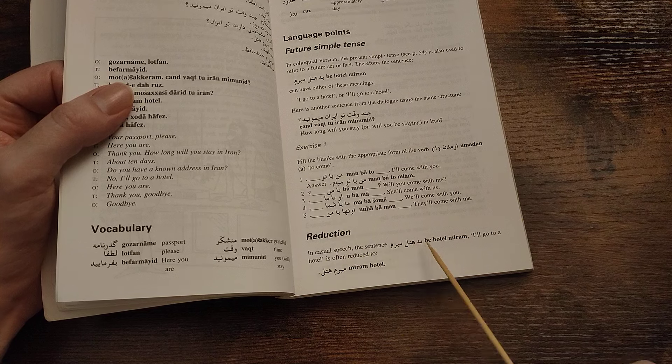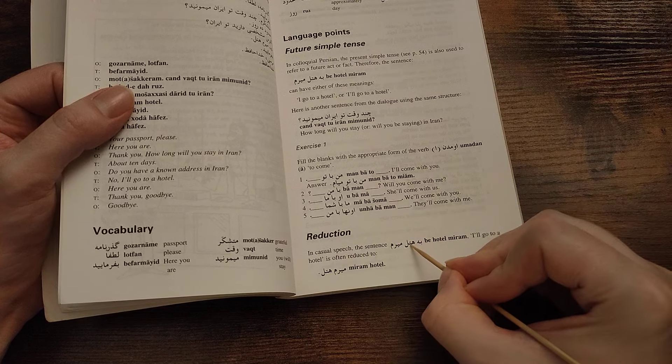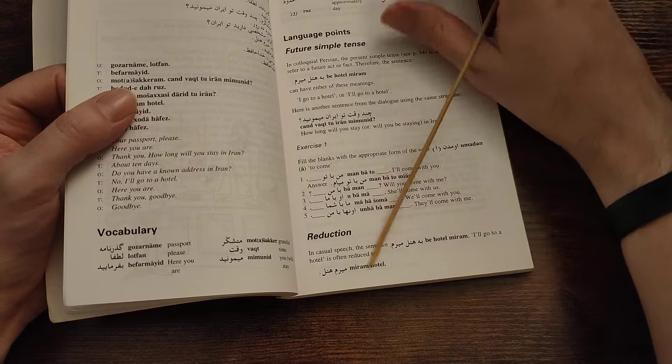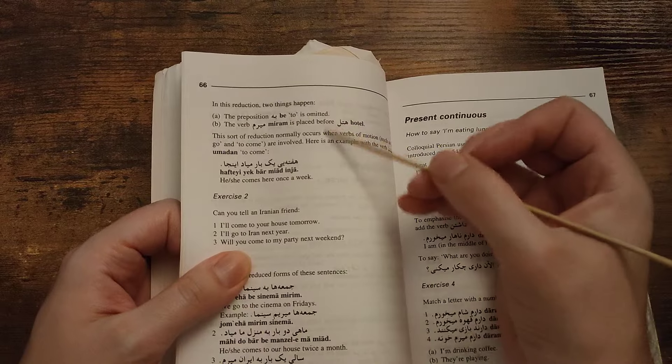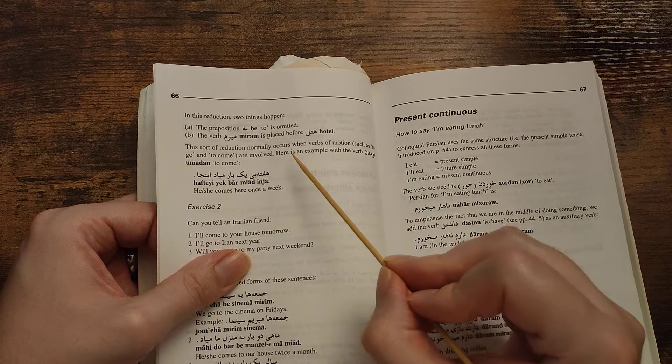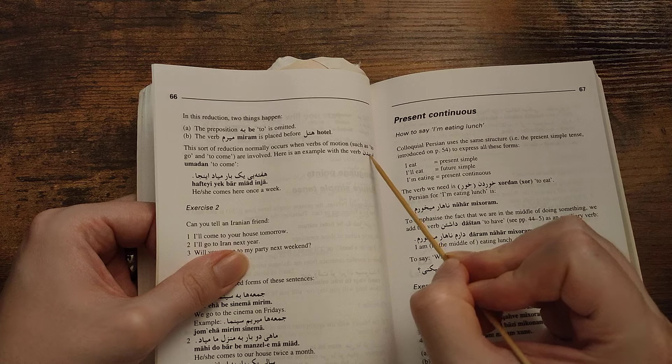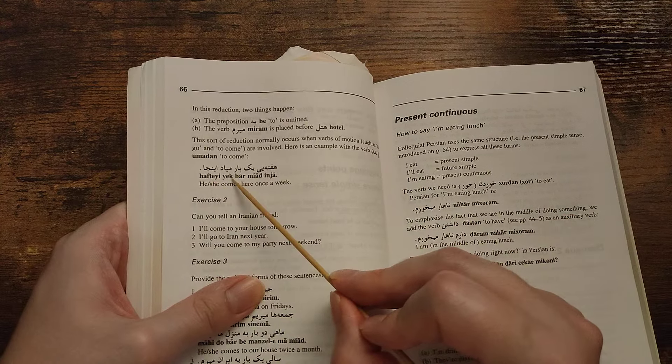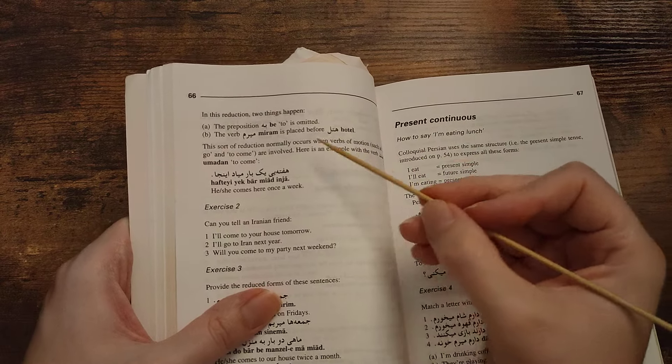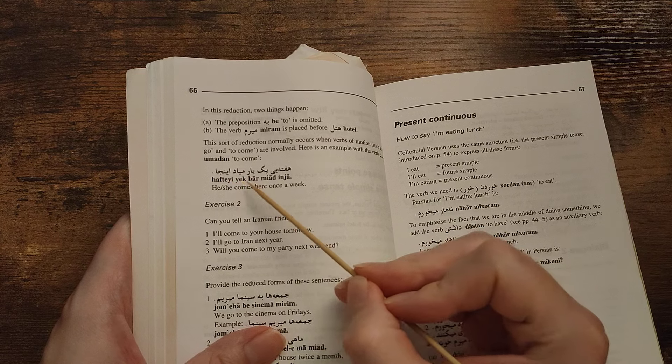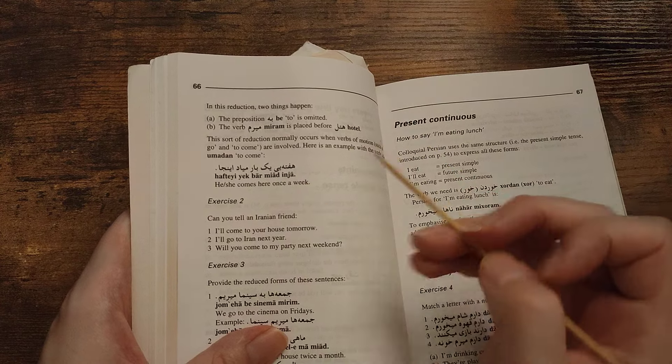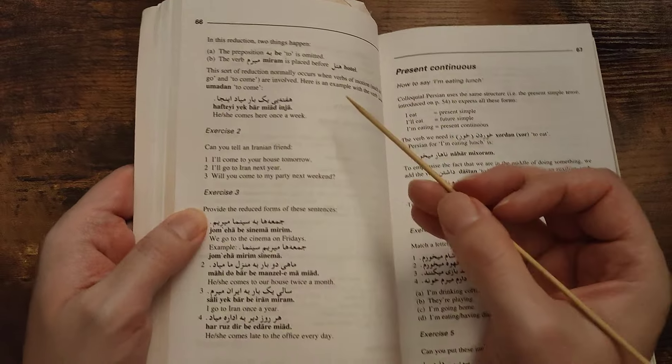Reduction. In casual speech, the sentence be hotel miram, I'll go to hotel, is often reduced to miram hotel without the be and in a different order. This sort of reduction normally occurs when verbs of motion, such as to go and to come, are involved. Here is an example with the verb amadan, to come. Haftey yekbar miyad inja. He comes or she comes here once a week. So haftey, in a week, yek one, bar time, miyad he or she comes, inja here.